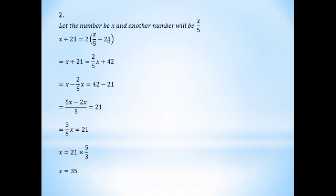Two times, so we have x plus 21 equal to 2x by 5 plus 21. Next step: x plus 21 equal to 2 by 5 x.